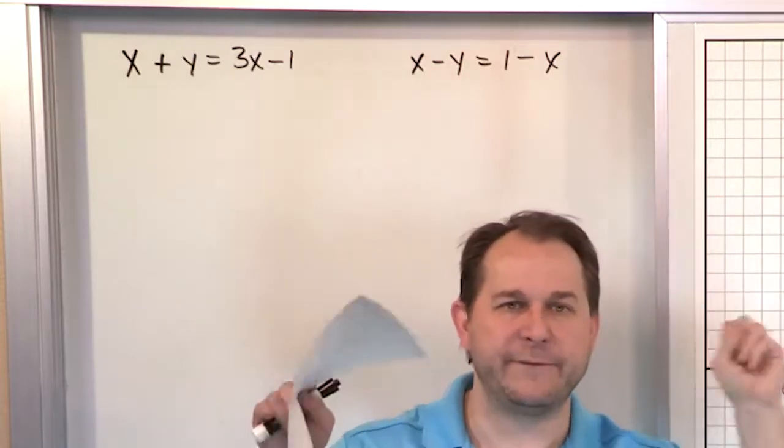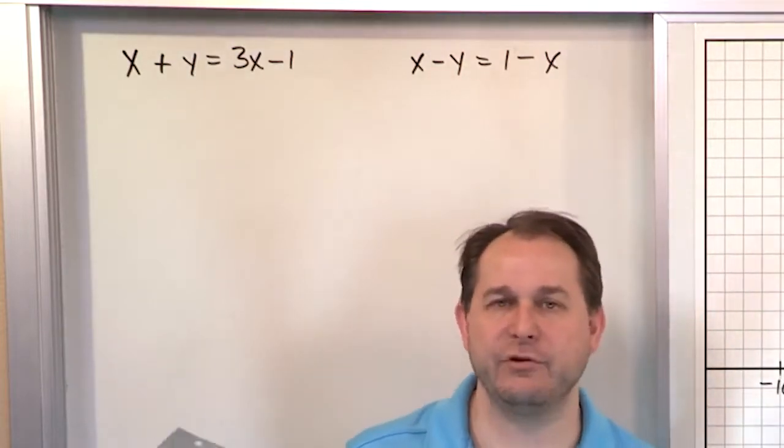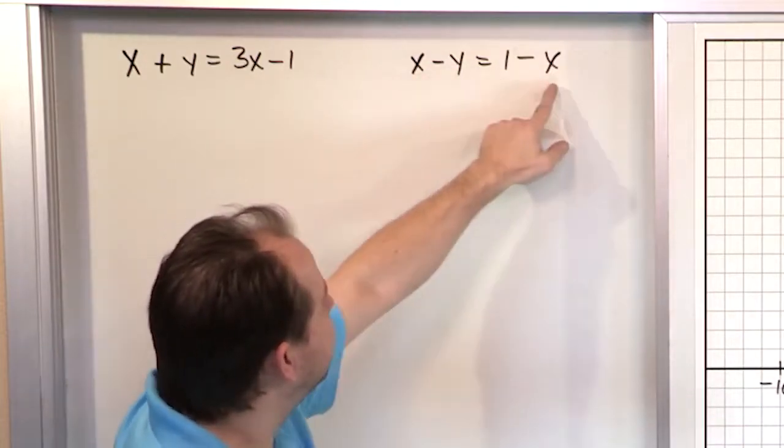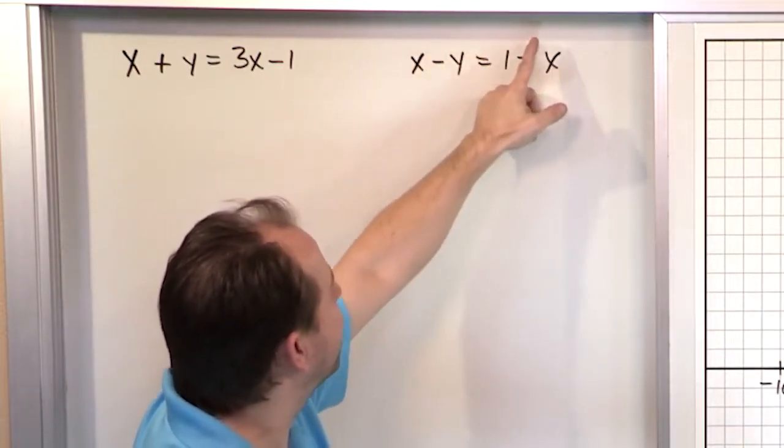Even though I haven't put it in flashing symbols for you, you know they're lines because this equation involves only x's and y's, and the only powers are ones.